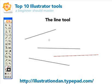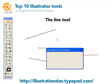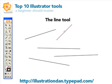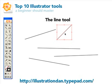Another way to do this is if you just click once, you can enter its length and you can also set its angle in degrees. So let's say you need a 45 degree angle — and there you go. It's pretty simple.